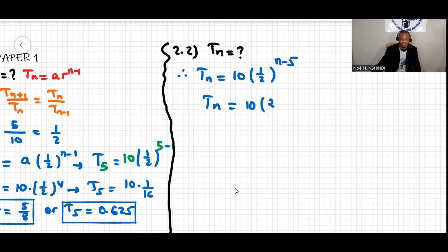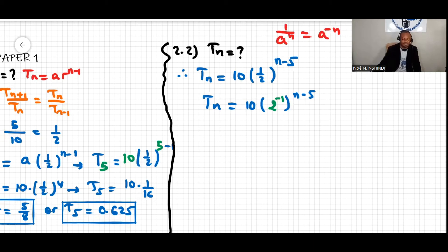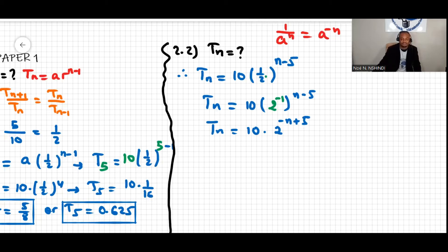This can be simplified because one-half is 2 to the power of negative one. Applying the exponent property where 1 over a^n equals a^(-n), we get cn equals 10 times 2 to the power of negative n plus one, or equivalently 10 times 2 to the power of 1 minus n. This simplified form is still correct.